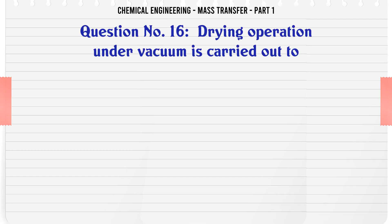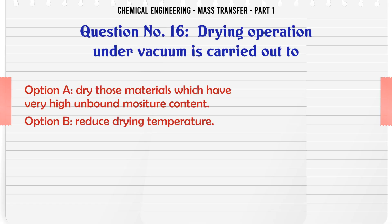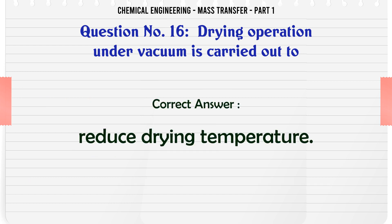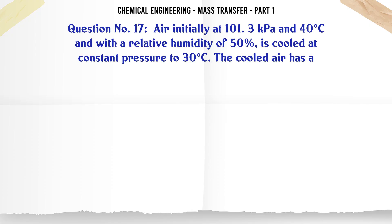Drying operation under vacuum is carried out to: A. Dry those materials which have very high unbound moisture content. B. Reduce drying temperature. C. Increase drying temperature. D. Dry materials having high bound moisture content. The correct answer is Reduce drying temperature.